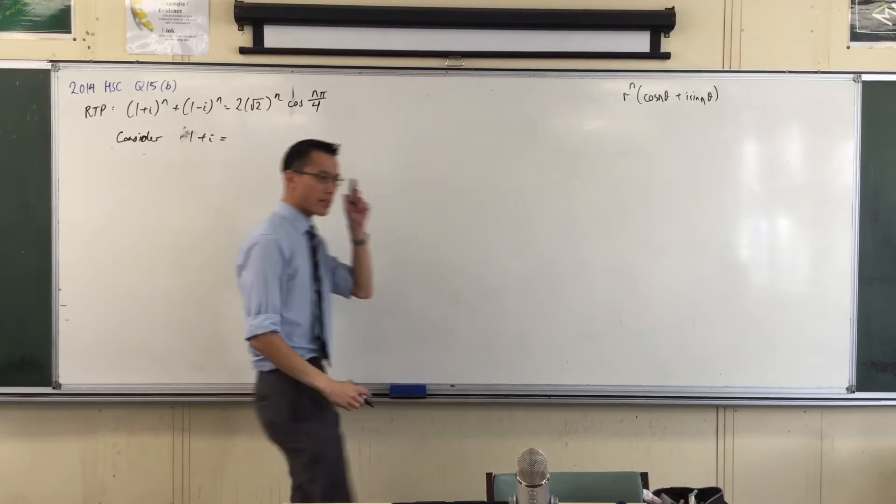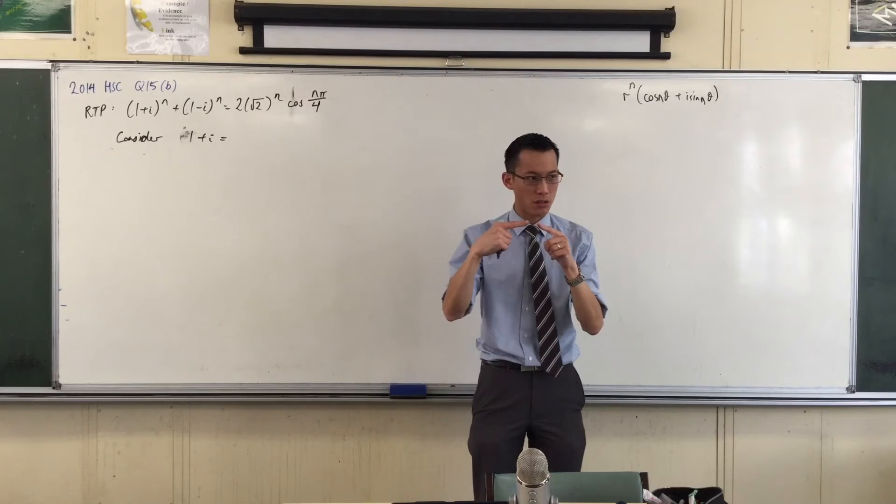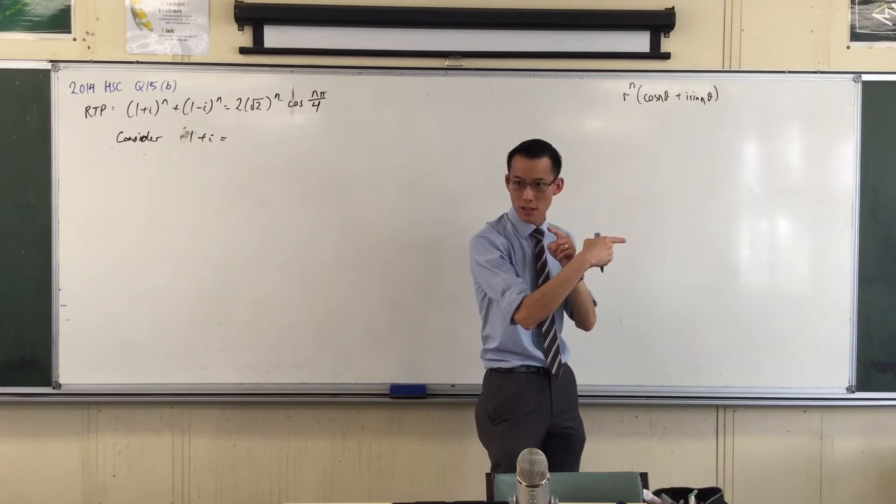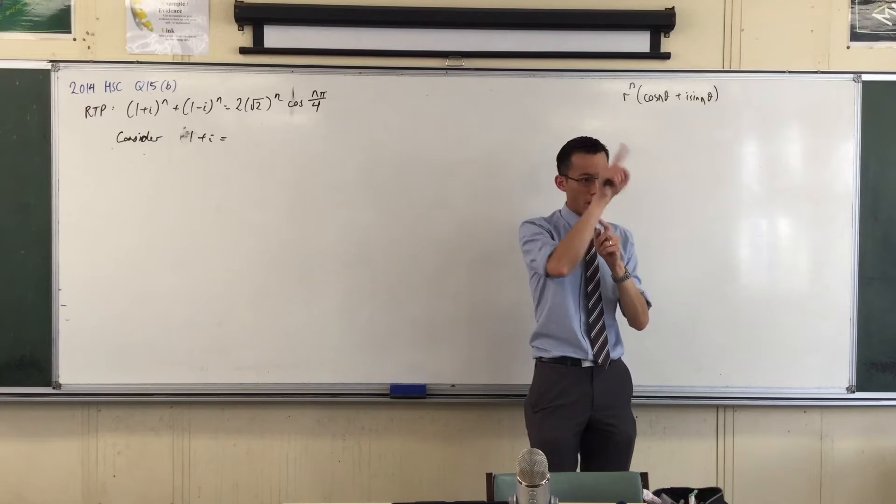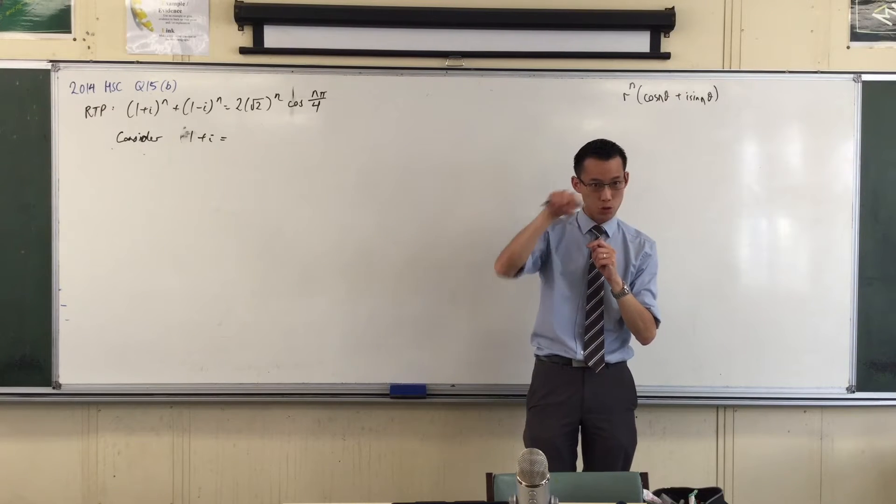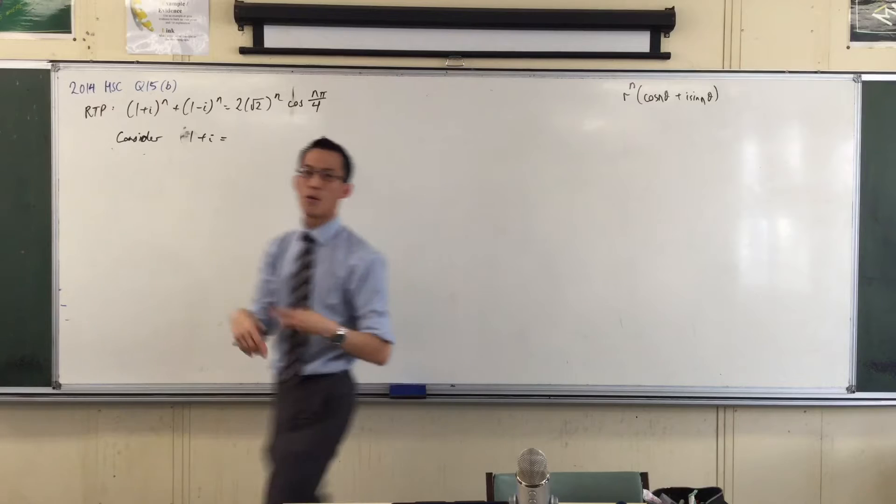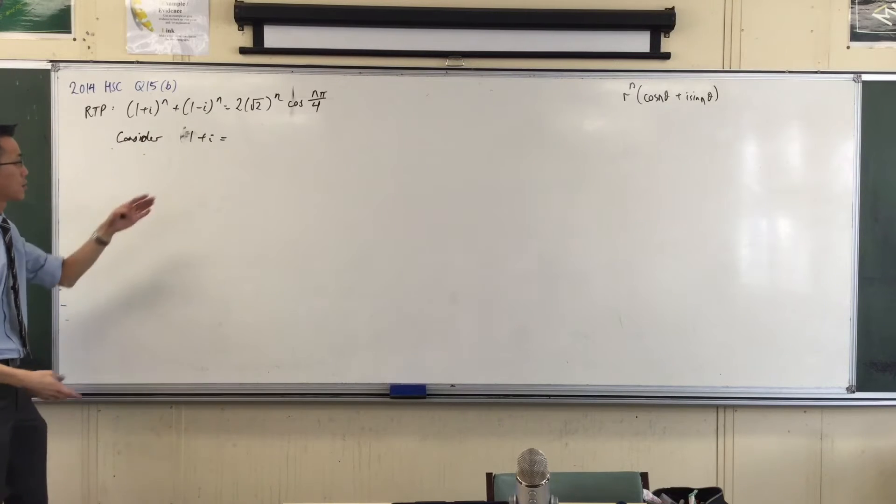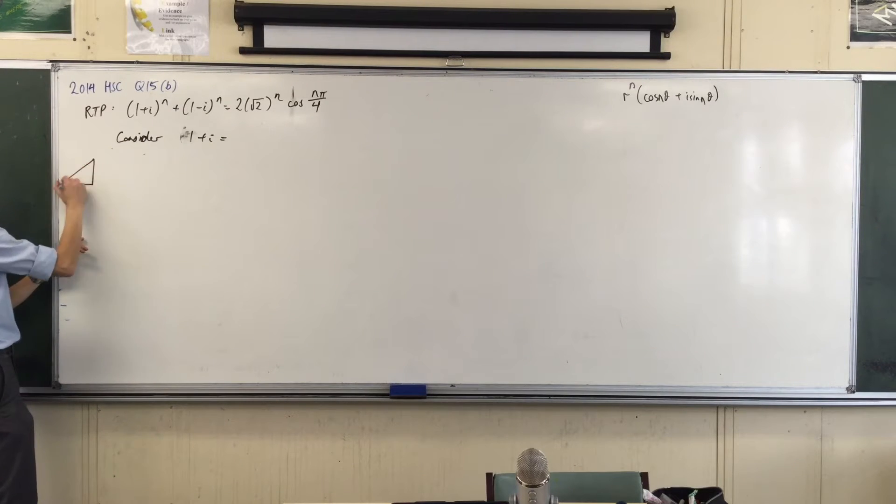Now, 1 plus I, where is it? Get an image in your mind. The 1 means go to the right, a unit. The I means go up. So you've got that little sort of triangle in your head, right? I want to convert this into polar form. So if I've got to the right, up, there we go. What's the modulus? This is 1, 1 root 2, right?